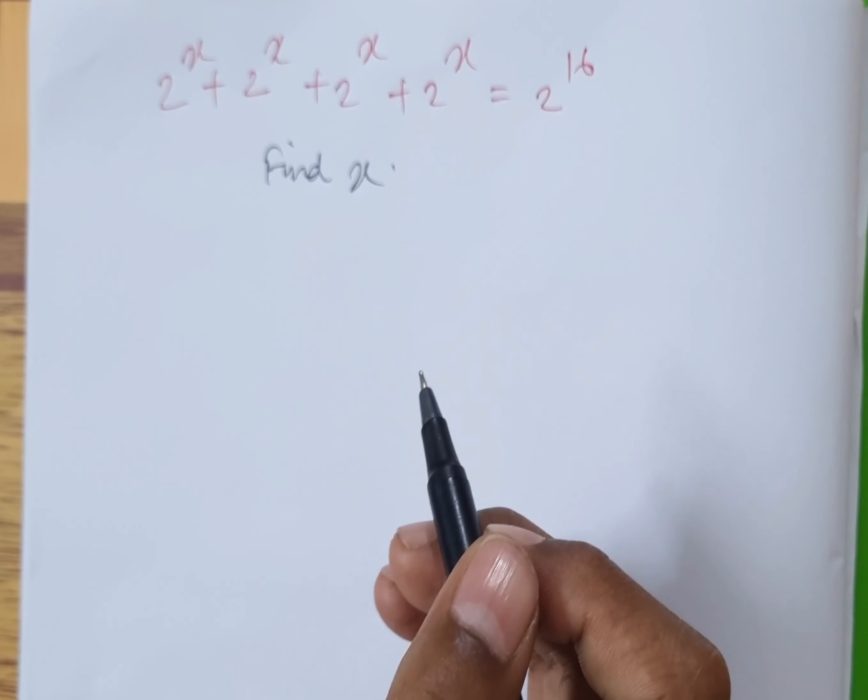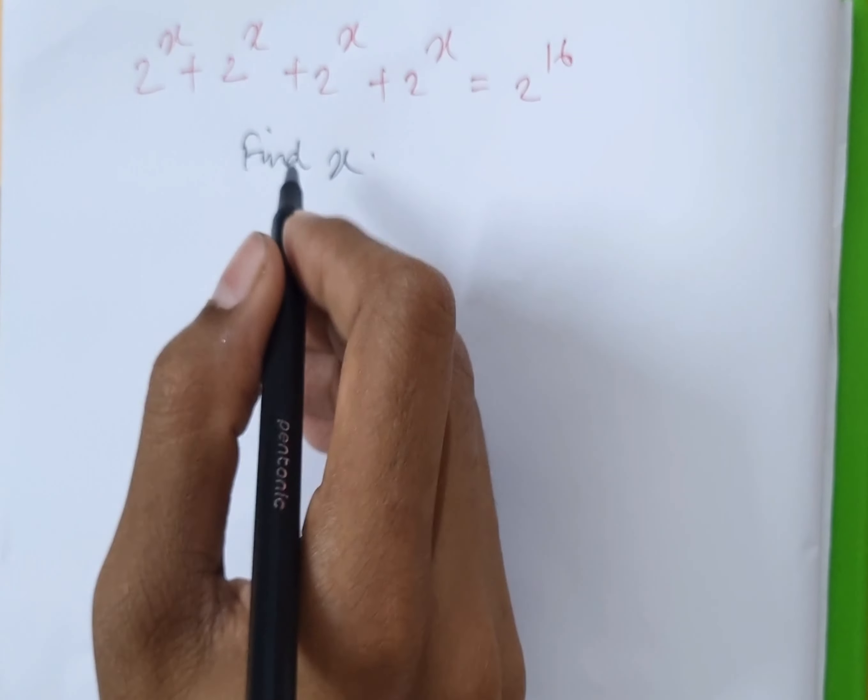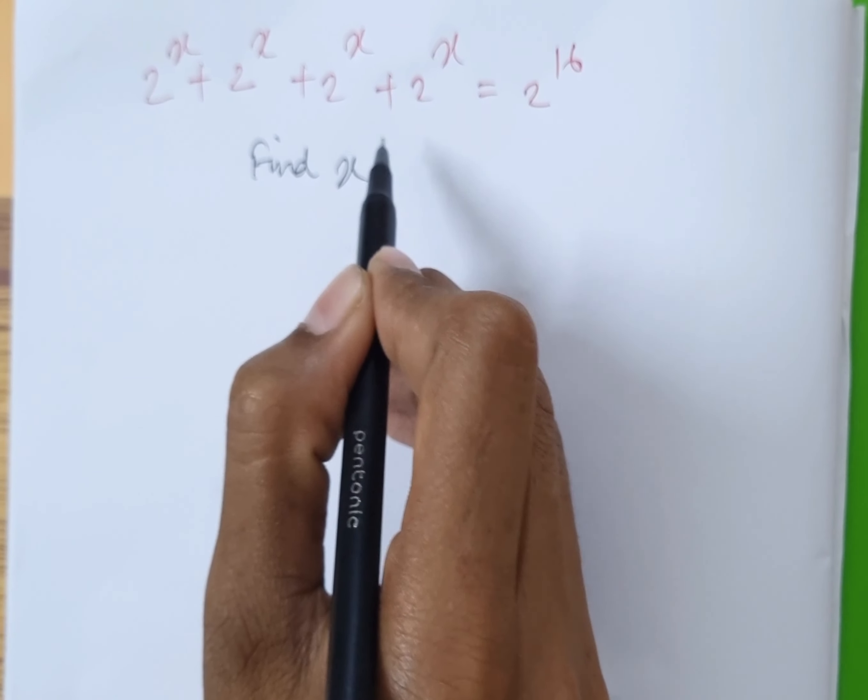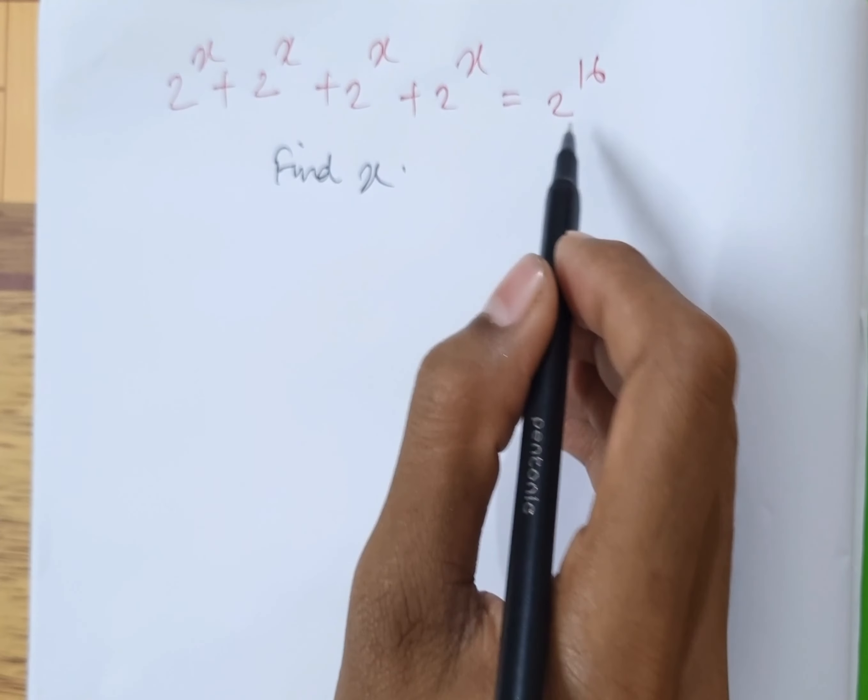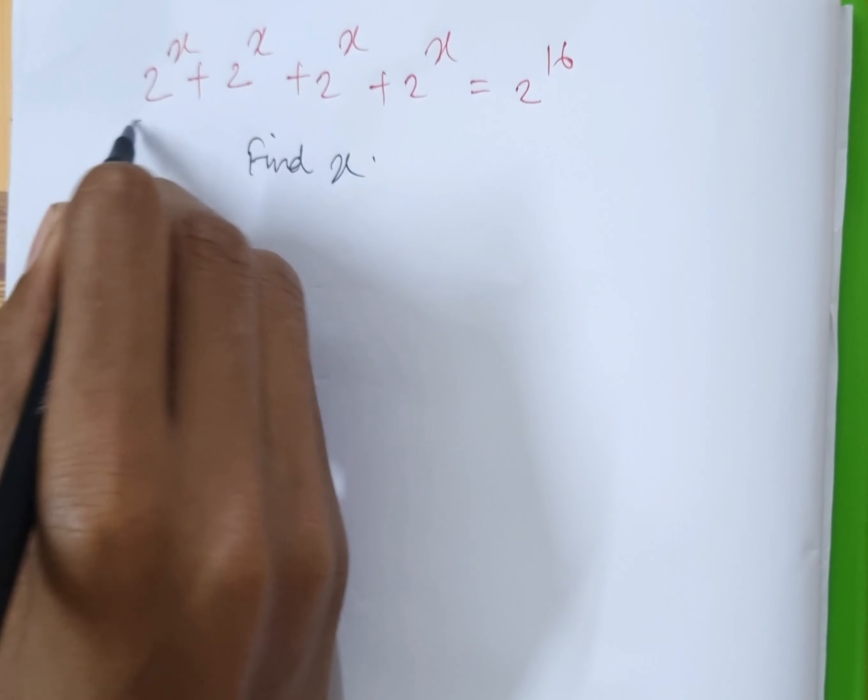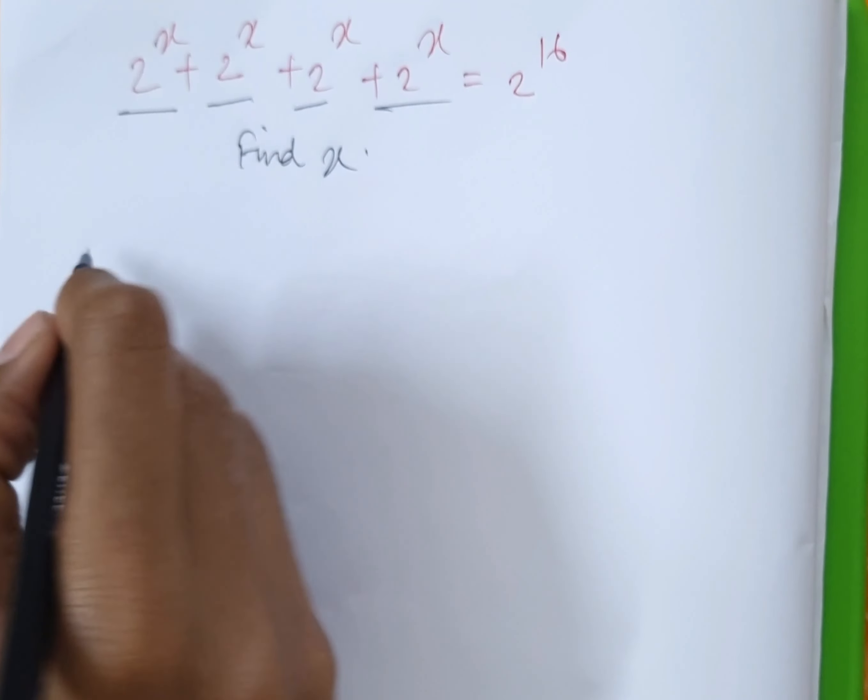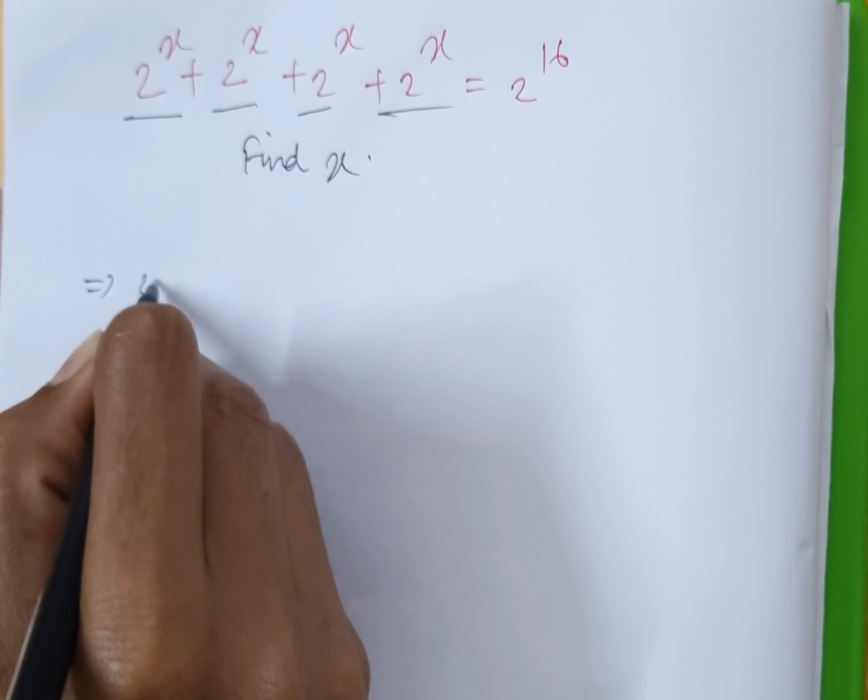It is told that 2 to the power x plus 2 to the power x plus 2 to the power x plus 2 to the power x equals 2 to the power 16. We can see that there are 4 terms of 2 to the power x, so we can write this as 4 into 2 to the power x equals 2 to the power 16.